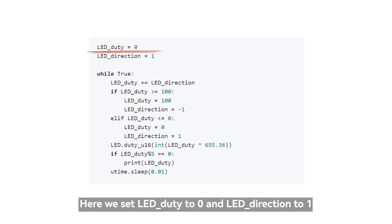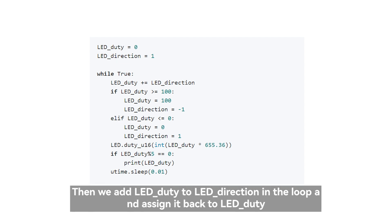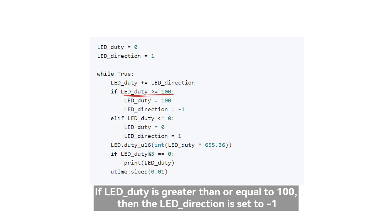Here we set LED_duty to 0 and LED_direction to 1. Then we add LED_duty to LED_direction in the loop and assign it back to LED_duty. If LED_duty is greater than or equal to 100, then the LED_direction is set to -1.